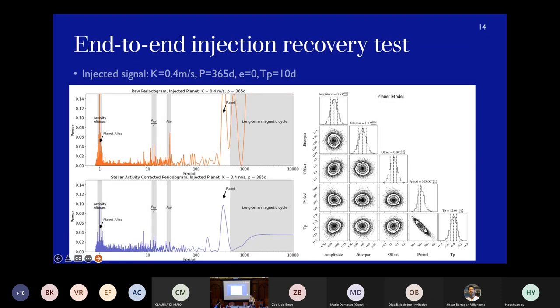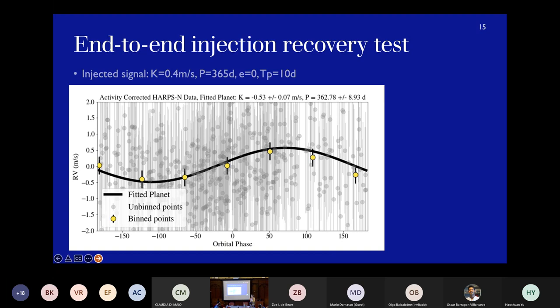So this is very promising, and we wanted to run an end-to-end injection recovery test just as a proof of concept. So we injected a signal of about 0.4 meters per second with a period of 365 days. And so you can see the top periodogram is just the raw without any kind of corrections where the planet is there, but it's kind of hard to see in the forest of stellar activity signals. And then after we run our neural network and apply our activity correction, you can see that the planet is a lot more clearly visible and still remains in there and is not removed by the neural network. So you can see the retrieved parameters there as well. And this is just the phase-folded result for that specific planet.